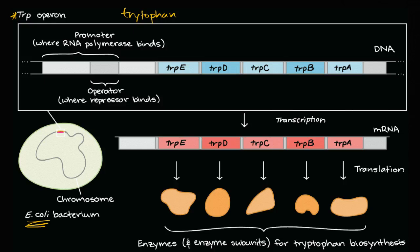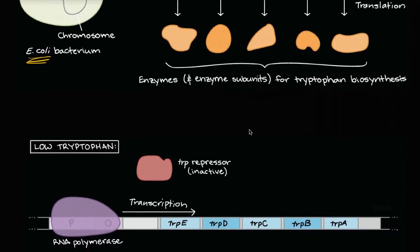So let's think about how this works. If we are in a low tryptophan environment, our E. coli needs tryptophan. It needs that amino acid as a building block for its proteins. So in that world, it makes sense that in a low tryptophan environment, the RNA polymerase can just latch on to the promoter and begin the transcription process. Transcribe these five genes into mRNA, which then can be translated into those enzymes, and then you will have more tryptophan biosynthesis.